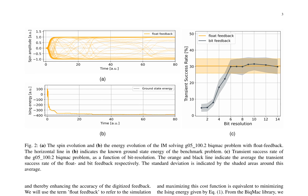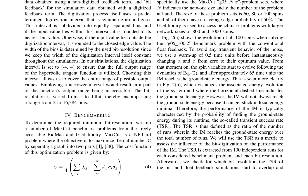Using the G05NX problem sets from the BIC-MAC library, with network sizes of 60, 80, or 100 spins and an average edge probability of 50%, the authors investigate the impact of digitization on performance. They also utilize the G-SET library to access benchmark problems with larger network sizes of 800 to 1000 spins. Figures 2A and 2B illustrate the spin and energy evolution of the Ising machine solving the G05-100.2 benchmark problem with float feedback.